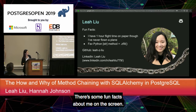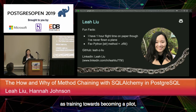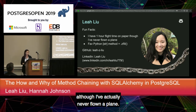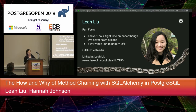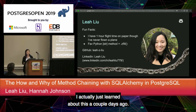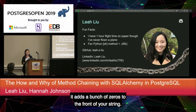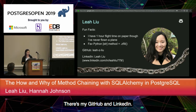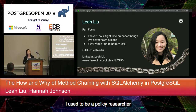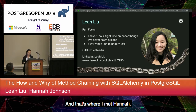My name is Leah. I have one hour of flight time logged on paper as training towards becoming a pilot, although I've actually never flown a plane. My favorite Python string method is .zfill — I just learned about this a couple days ago. Basically it adds zeros to the front of your string. I used to be a policy researcher before I fell in love with coding and decided to move to San Francisco to become a software engineer, and that's where I met Hannah.